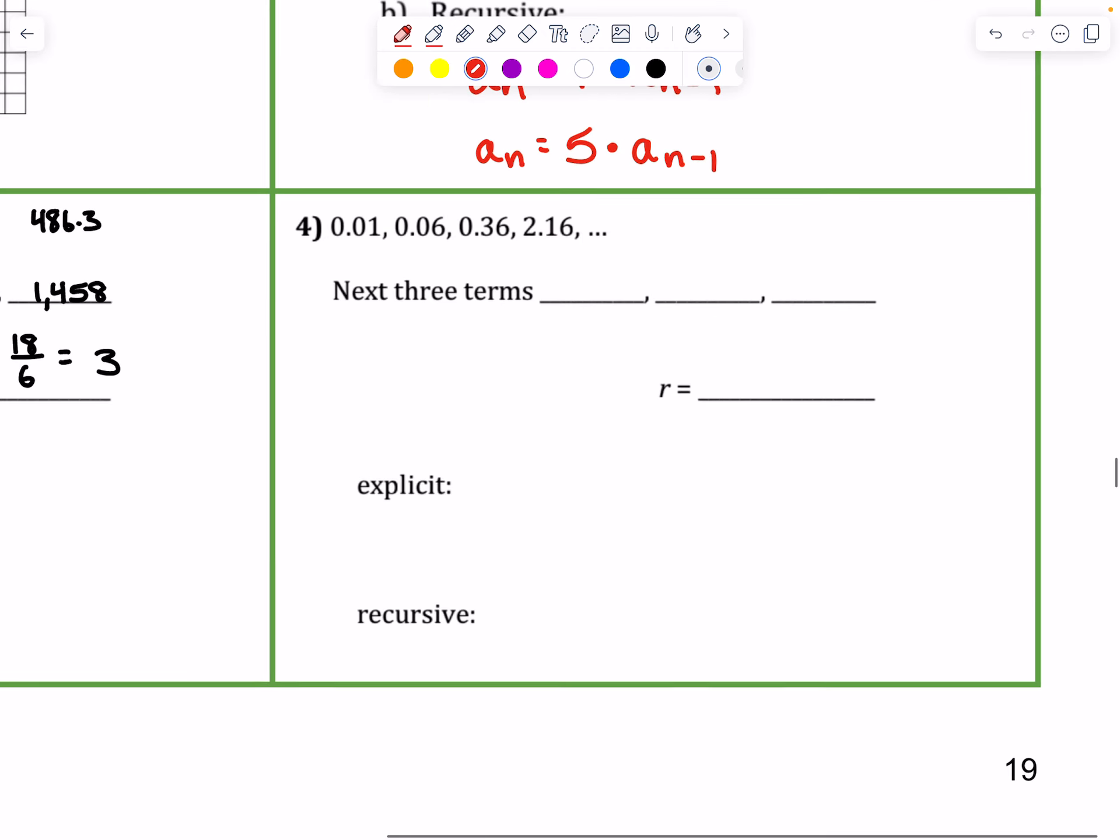All right, so last example. It just has some decimals, but works the same way otherwise. So the common ratio R would be any term divided by the previous term. So let's take 0.06 divided by 0.01, which should be the same thing if we divide 0.36 by 0.06, which just gives us 6 either way. So the next three terms will be to take the last term and multiply by 6. So 2.16 times 6 would be 12.96. I calculated that in advance. And then that number times 6 is 77.76. And 77.76 times 6 is 466.56. But you could certainly do that on your calculator as well. So let's write out the first term is equal to 0.01, and the common ratio was 6.